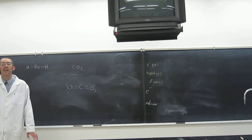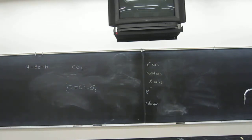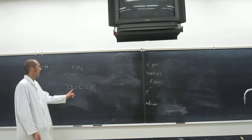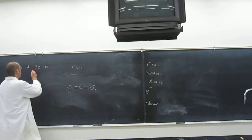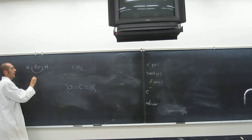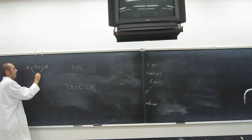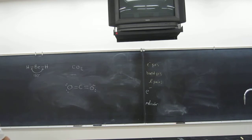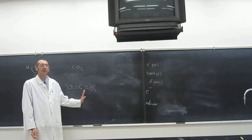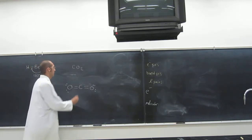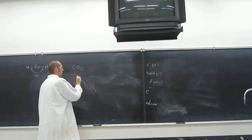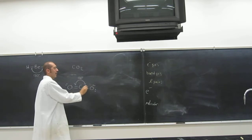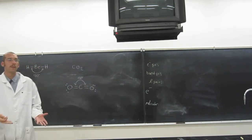Remember, valence shell electron pair repulsion theory — if we've got these electron pairs or bonds, they want to be as far apart from each other as possible. What did we say the bond angle was? 180°. Why? Because we've got two bonds and they want to be as far away from each other as possible. What about here — what do you think the bond angle is? 180° as well. Why? Because these double bonds act as one whole bond.